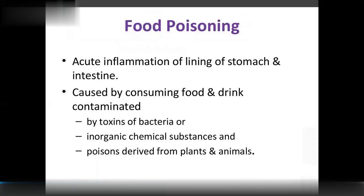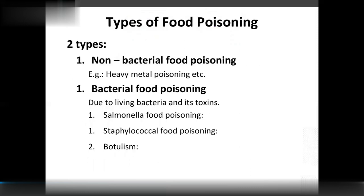Food poisoning is an acute inflammation of the lining of the stomach and intestine caused by consuming food and drink contaminated with bacteria, viruses, or chemical contaminants. There are two types: non-bacterial food poisoning and bacterial food poisoning.